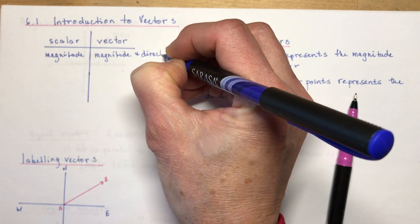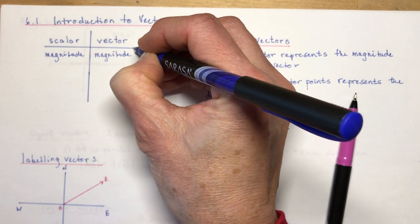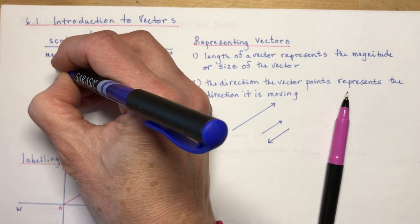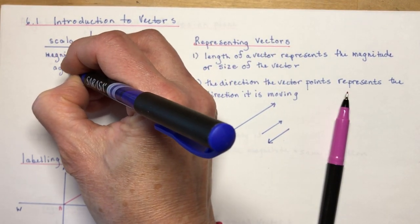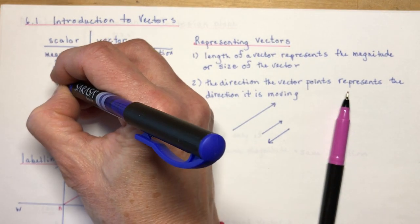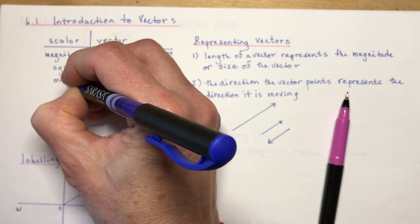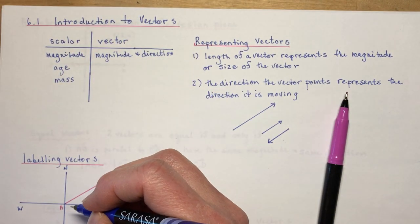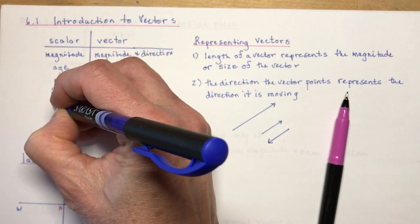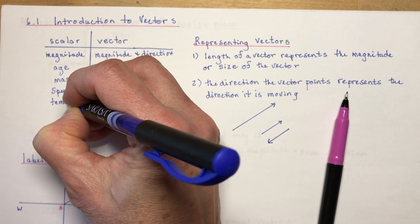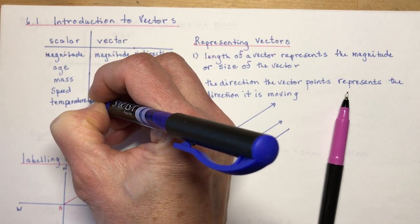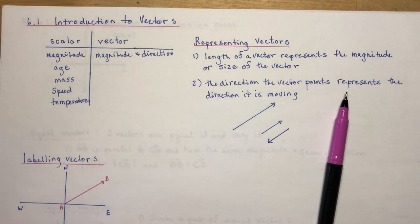So things that have just magnitude would be something like your age. I'm 63 years old. Or the mass of something. Or your speed. Or the temperature outside, or inside, or of your body. Those just are scalars.